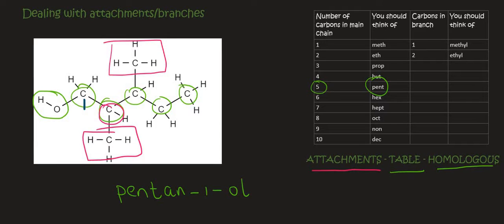Each of those attachments have how many carbons? Well, they just have one carbon. So we go to our carbons in branch and we see that that would be methyl. So we can write the word methyl over here.